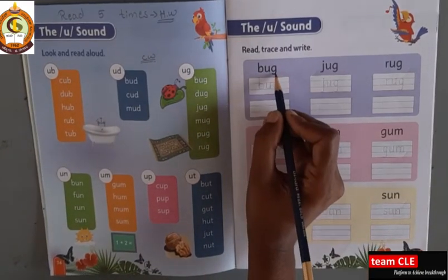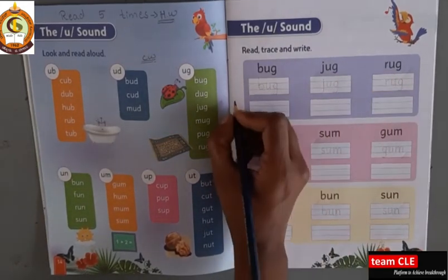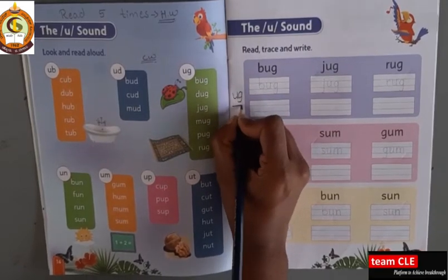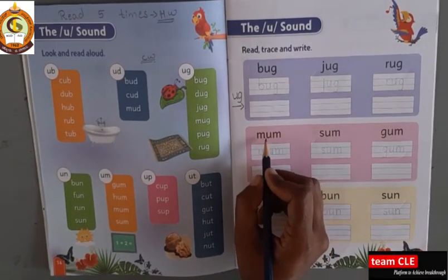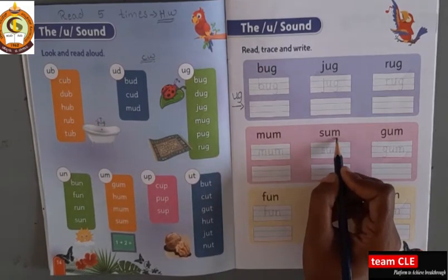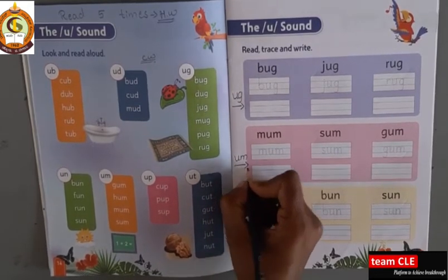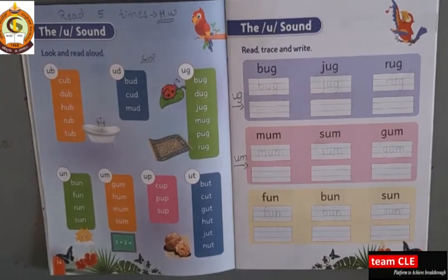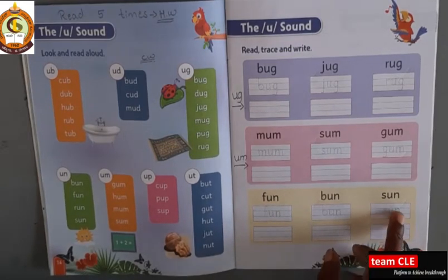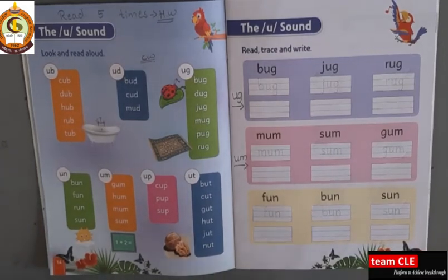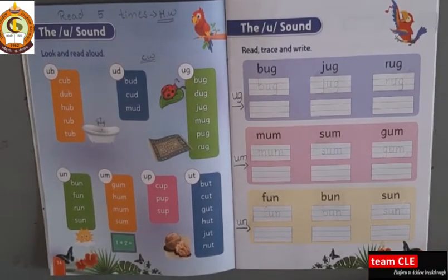So first we will read the words, then we will trace it, then we will write it. So these are U-G sound words. U-G sound words. Next, these are U-N words. Next, F-U-N, fun. B-U-N, bun. S-U-N, sun. So these are U-N sound words. Okay?